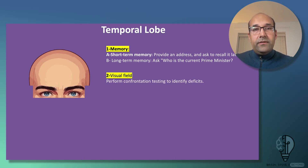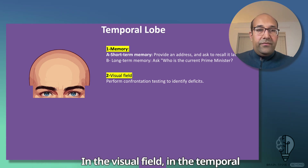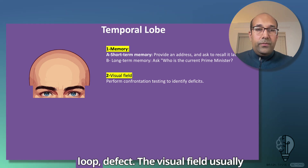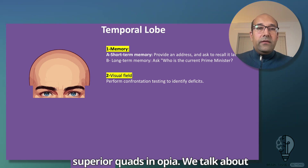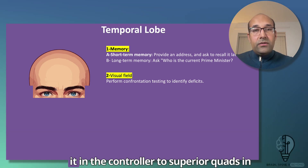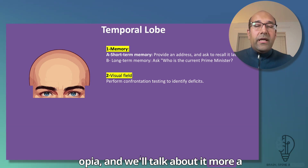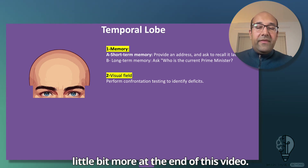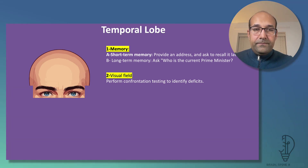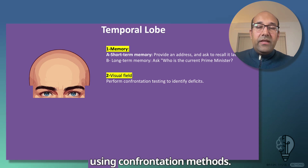Moving to the next item: visual field. In temporal lobe lesions, the visual field defect is typically a superior contralateral quadrantanopia — we'll discuss this more at the end of the video. The visual field can be examined using confrontation methods.